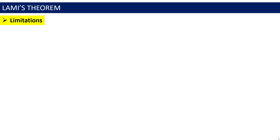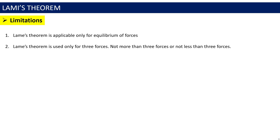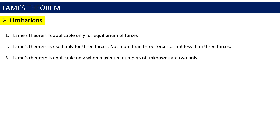The limitations of Lami's theorem are: it is applicable only for equilibrium of forces; it is used only for three forces — not more than three and not less than three; it is applicable only when three concurrent forces are acting at a point; all three forces should act towards the point or away from the point; and it is applicable only when the maximum number of unknowns is two. Out of the three forces, if all three are unknown, the problem cannot be solved.